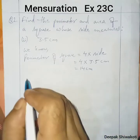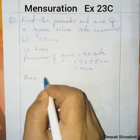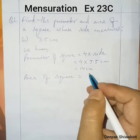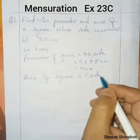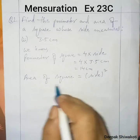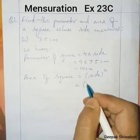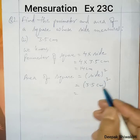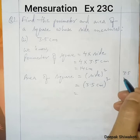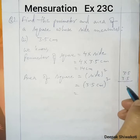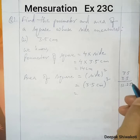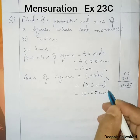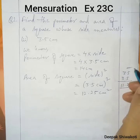Now area of square is equal to side squared — this is the formula to find the area of a square. Side is given as 3.5 centimeter, so 3.5 squared. When we calculate, we get 12.25 centimeter square. Practice these kinds of calculations also.